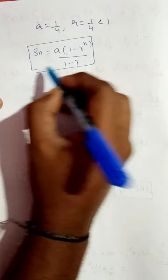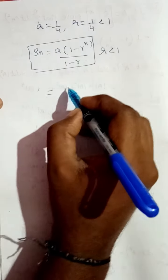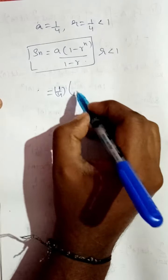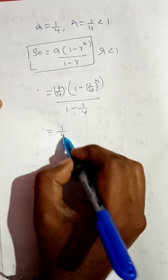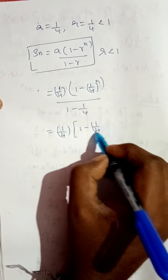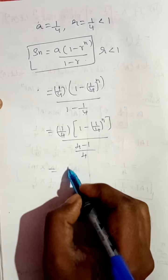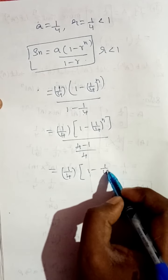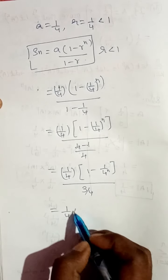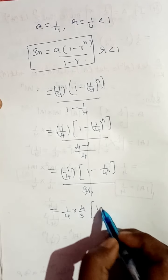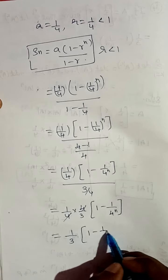Since r is less than 1, we use the formula S_n = a(1 - r^n) / (1 - r). Substituting a = 1/4 and r = 1/4: S_n = (1/4) × (1 - (1/4)^n) divided by (1 - 1/4), which equals (1/4) × (1 - (1/4)^n) divided by 3/4. Taking 4/3 to the numerator, the 4s cancel, giving the answer 1/3 × (1 - (1/4)^n).